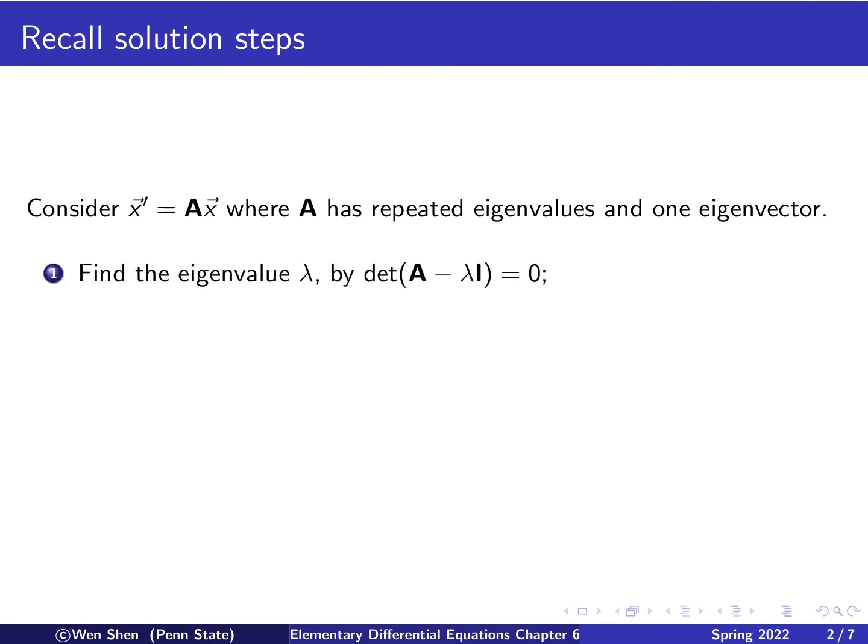The first step is to find the eigenvalue lambda, and this you find by setting up the characteristic polynomial of the A matrix and set it to be 0, and find the roots. So here you find a double root, and then you find the corresponding eigenvector by solving this equation. And then here by the setting of our discussion, you will find only one eigenvector.